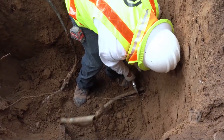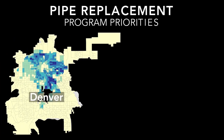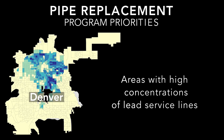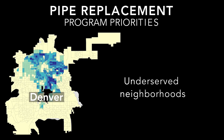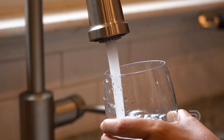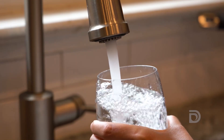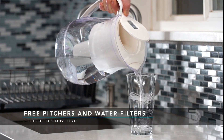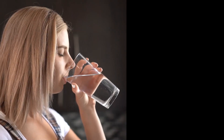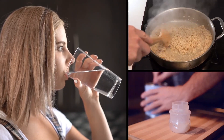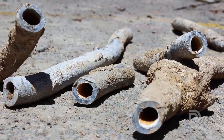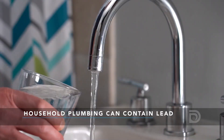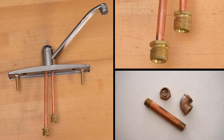Most of the properties are homes built before 1951. Pipe replacement takes place on a neighborhood-by-neighborhood basis starting in 2020, and it will take 15 years to replace all the lines. Priority is given to areas with facilities serving infants and children, areas with high concentrations of lead service lines, and underserved neighborhoods. Denver Water is also sending customers a free pitcher and water filters certified to remove lead, which should be used for drinking, cooking, and making infant formula.